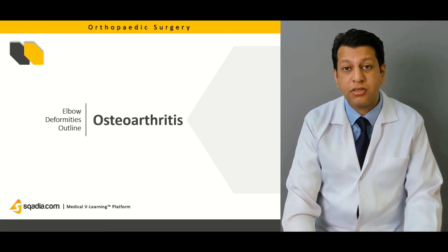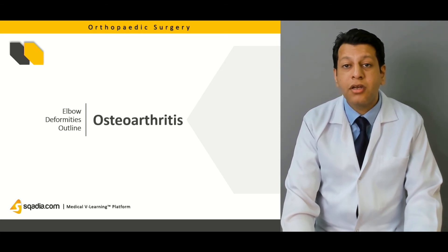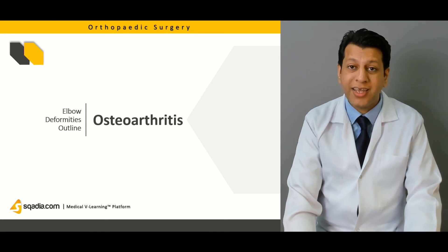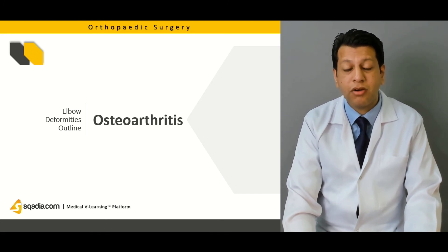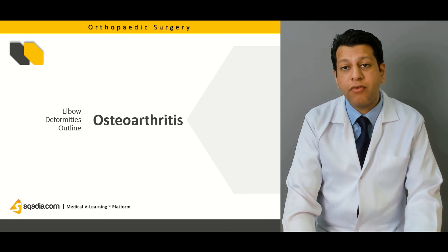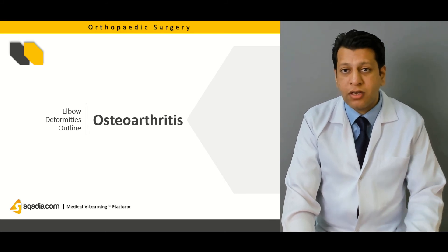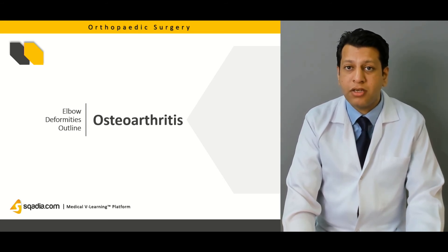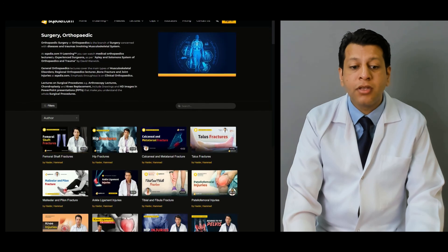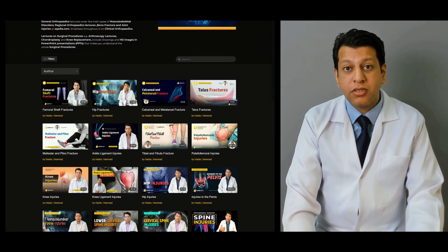We'll then move on to osteoarthritis of the elbow. It is actually incomplete to discuss elbow pathology without mentioning osteoarthritis and rheumatoid arthritis. We'll briefly discuss the clinical features of osteoarthritis around the elbow, the X-ray representation, and treatment options. We'll also briefly cover total elbow arthroplasty, which is now quite common especially in cases of rheumatoid arthritis and osteoarthritis of the elbow.